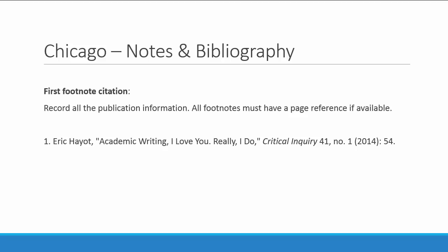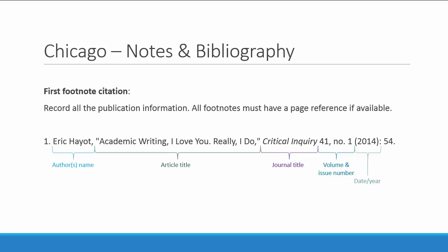In this journal footnote, note the order of the author name, the article title in quotation marks, the journal title in italics, the volume and issue numbers, the year in round brackets, and then the page number preceded by a colon.